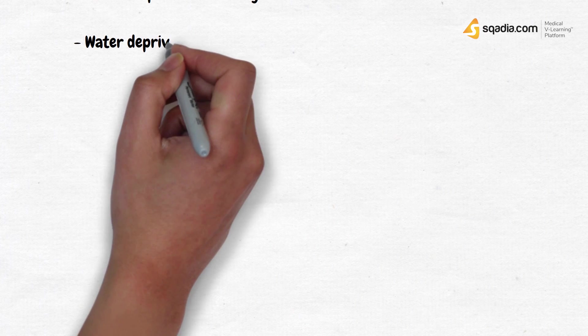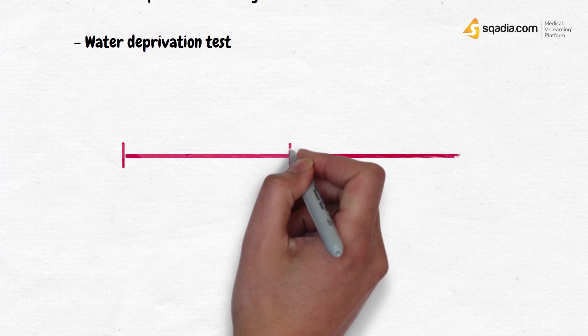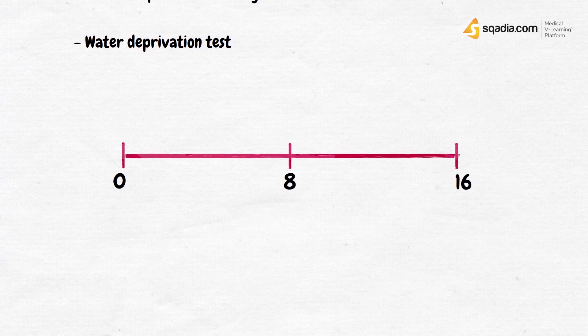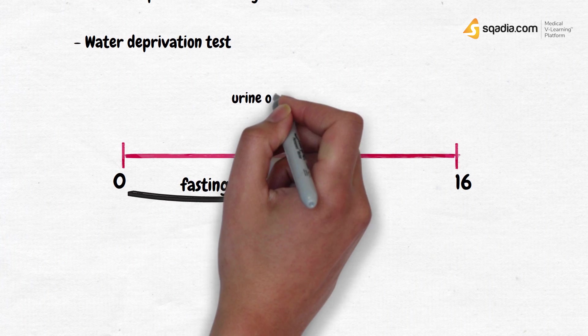The most important test for diabetes insipidus is the water deprivation test. Here's how it's done. You ask the patient not to have any food or drinks for 8 hours, and at the end of 8 hours, you check urine osmolality.